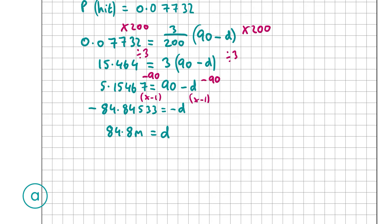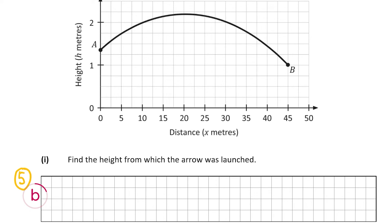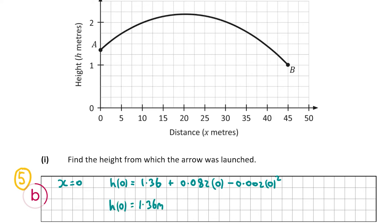Part B tells us that Jack shoots an arrow from 45 meters. The path is described by h(x) = 1.36 + 0.082x − 0.002x², where h is height and x is horizontal distance. Point A is where the arrow was launched and B is the target. Part B1 asks for the launch height: when x = 0, h(0) = 1.36 + 0 − 0 = 1.36 meters.